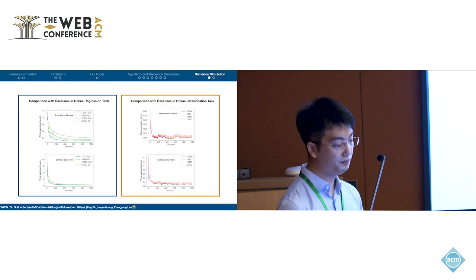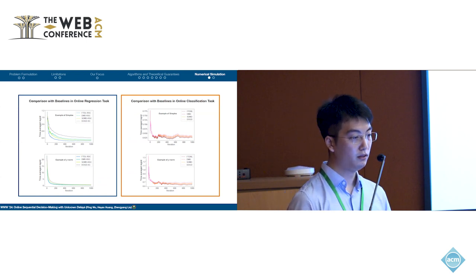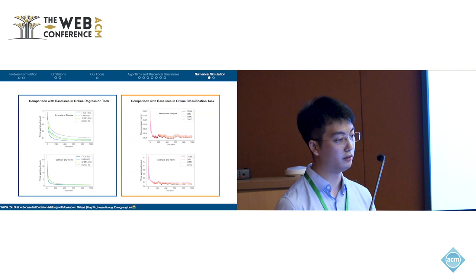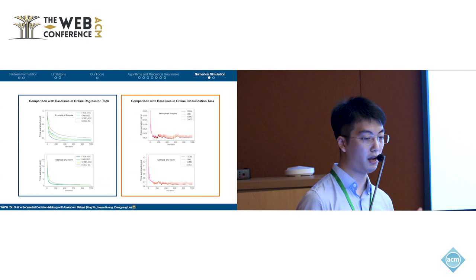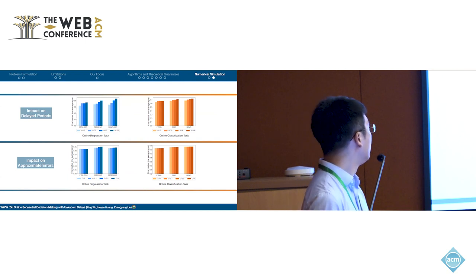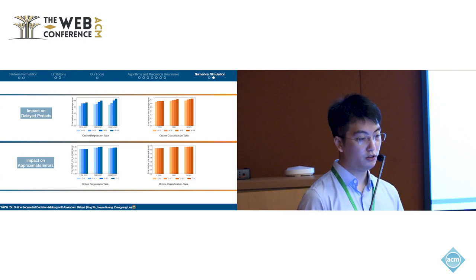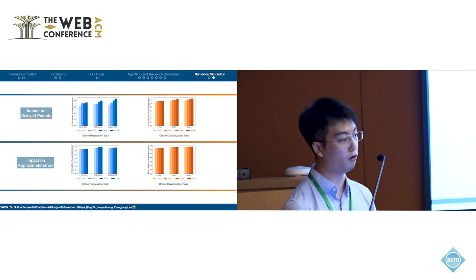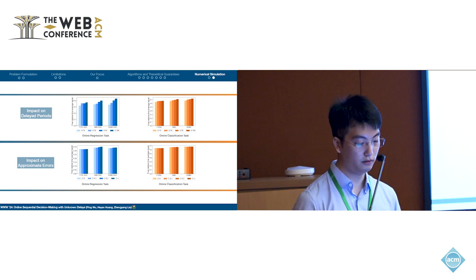We conduct experiments on some examples using real-world and artificial data. Our proposed three types of algorithms outperform the baselines in different examples and different spaces. We also evaluate the impact of delayed periods and approximation errors. These simulation results present the same trend as our theoretical results.